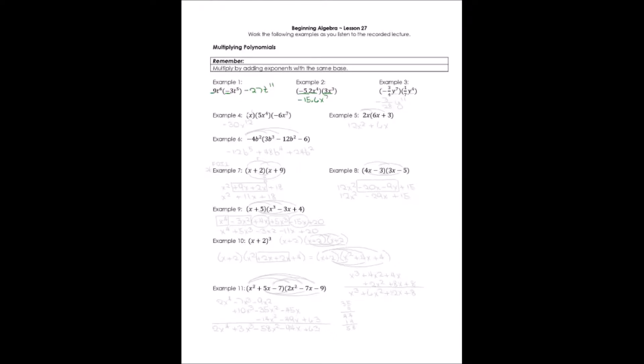When I have fractions, I multiply numerator times numerator, denominator times denominator. This is negative 3/4 times positive 1/7, so my answer will be negative. 3 times 1 is 3, and 4 times 7 is 28. Now for the variables: y to the 7th times y to the 4th — adding those exponents — we get y to the 11th.